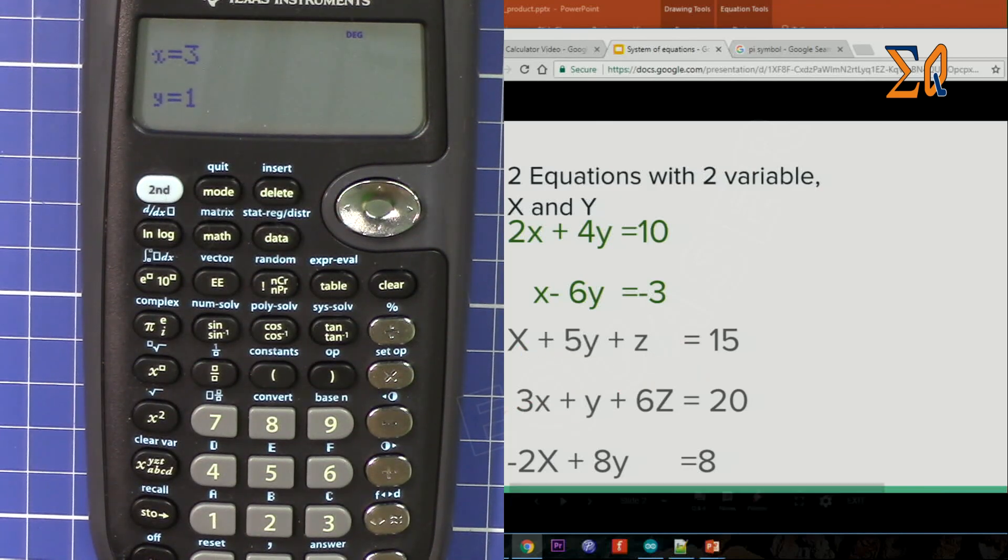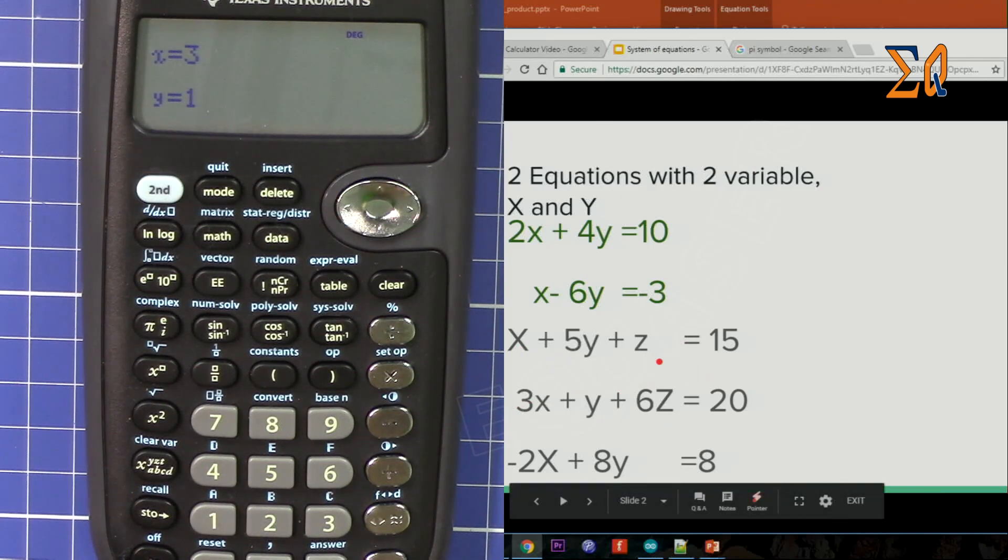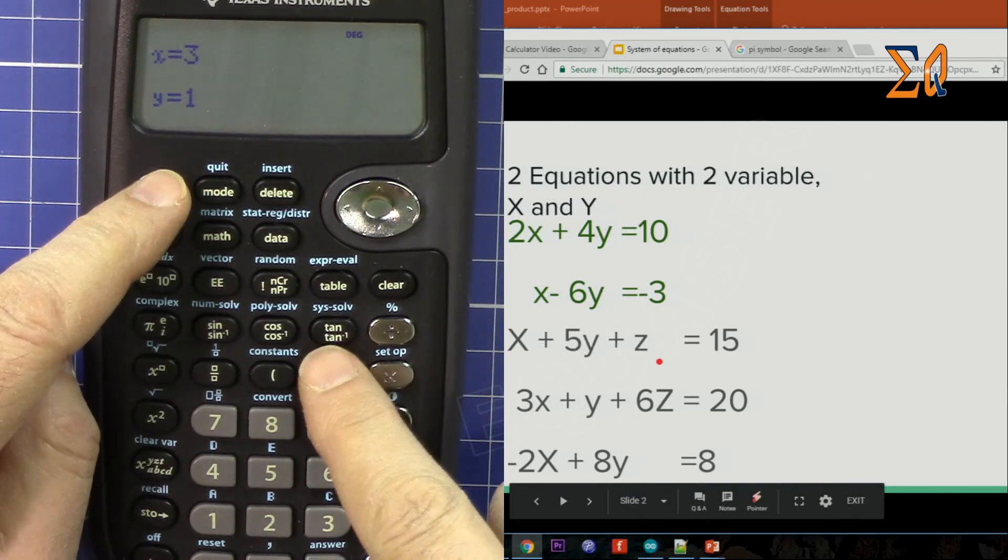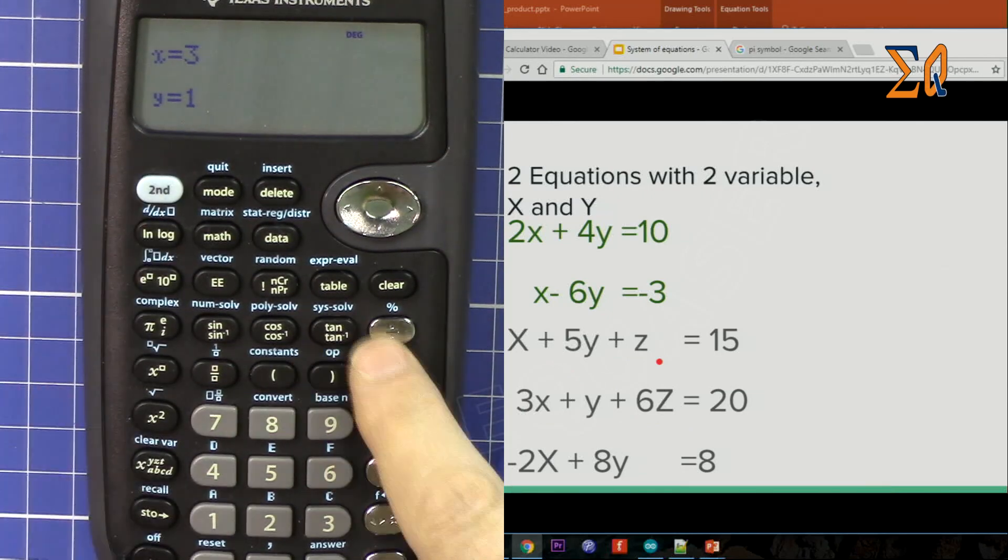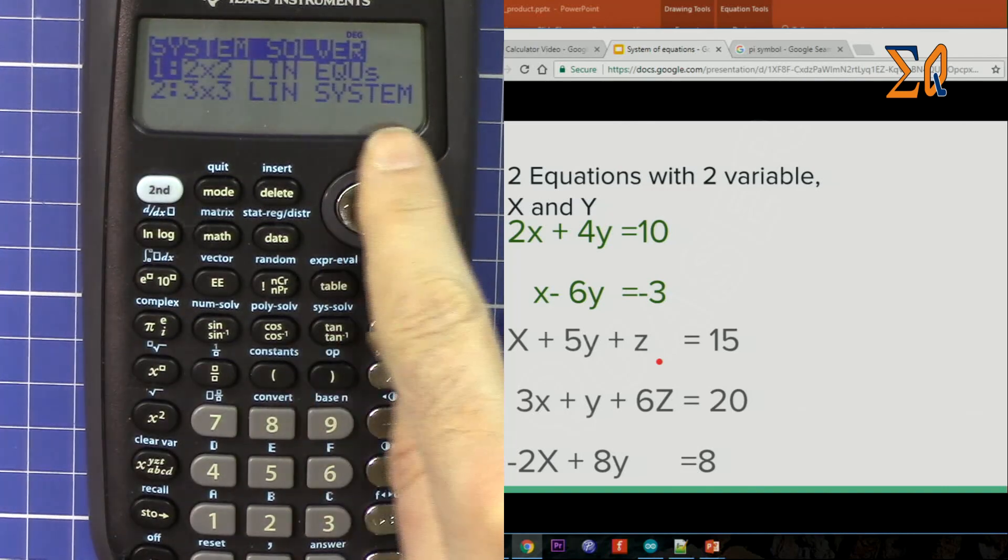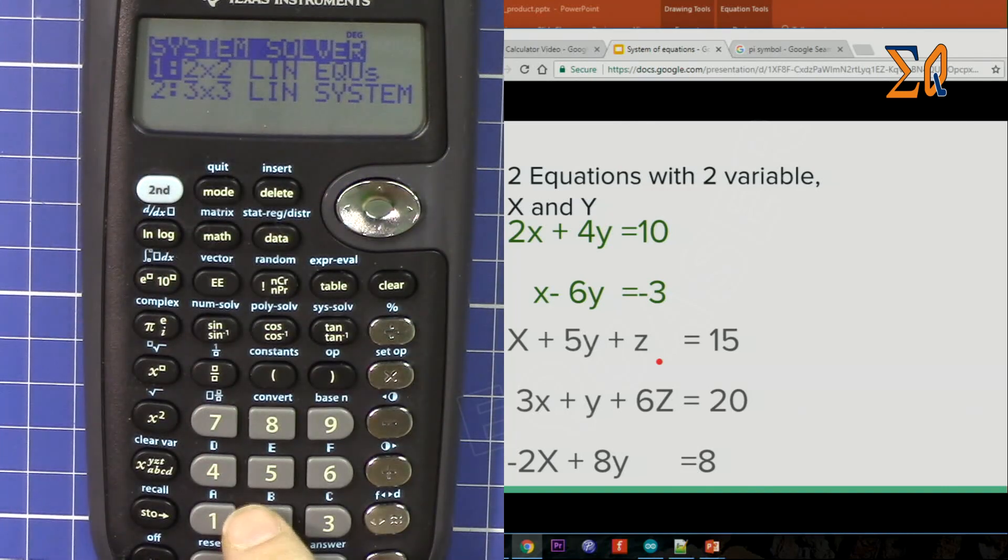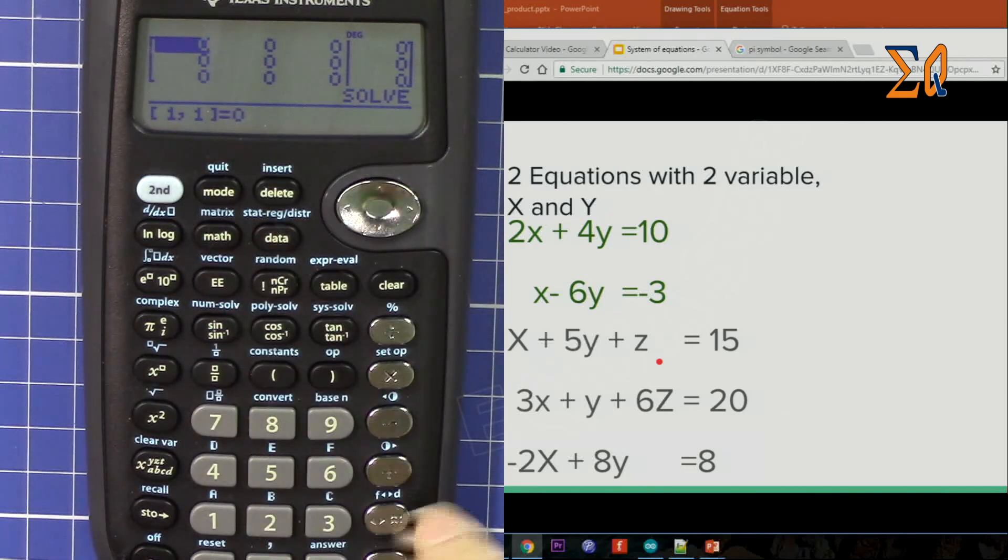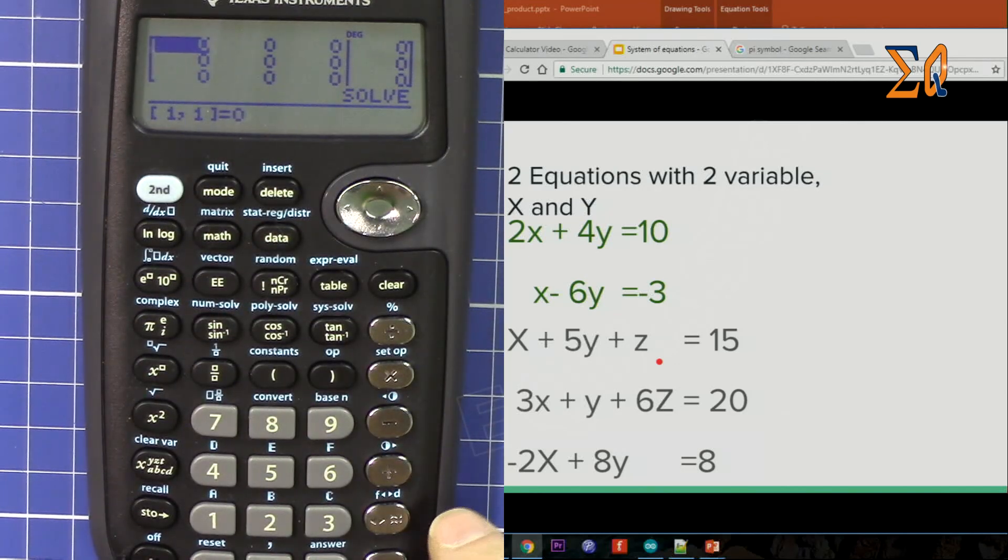Now we have the system of equations with three variables. This time we have three equations, three variables: x, y, and z. System, the second function is clear, sys function solve. Now press 2. This time we have this representation of the screen. So x here is 1, and then 5, and then 1.